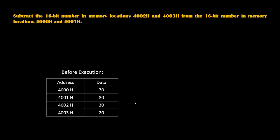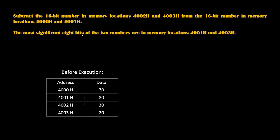On consecutive memory locations 4000 to 4003, some random data is stored. The most significant 8 bits of the two numbers are in memory locations 4001H and 4003H. So the first number is 8070H and the second number is 2030H. We need to subtract these two numbers.